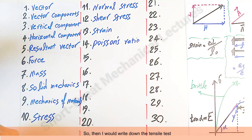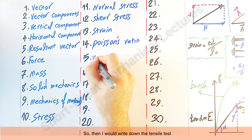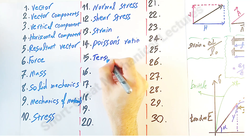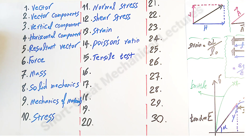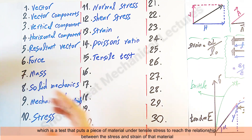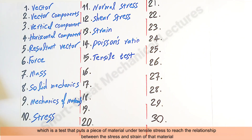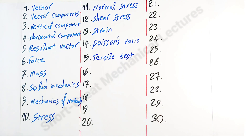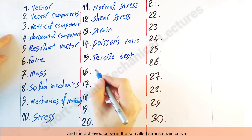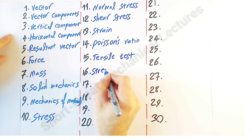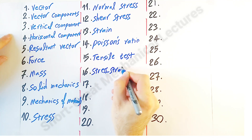Then I would write down 'tensile test,' which is a test that puts a piece of a material under tensile stress to find the relationship between the stress and strain of that material. The achieved curve is the so-called 'stress-strain curve.'